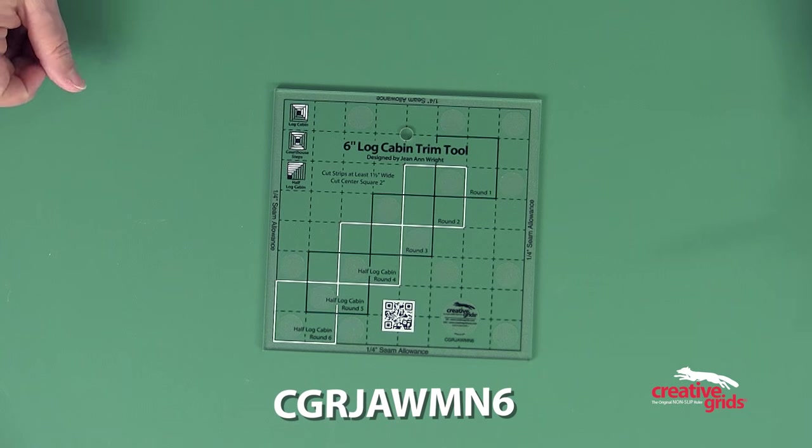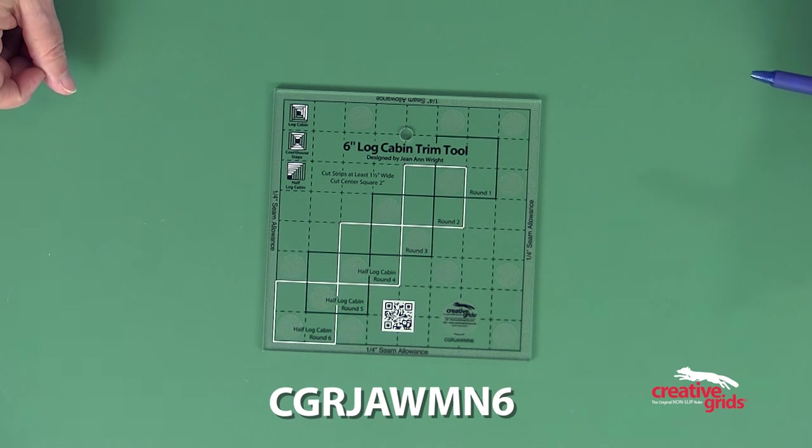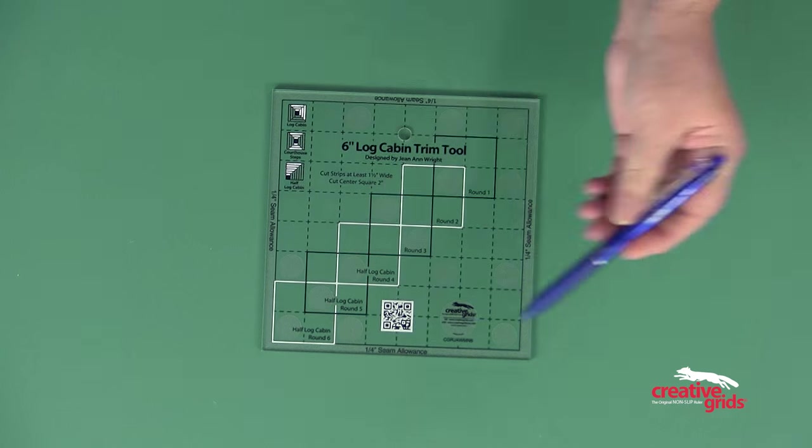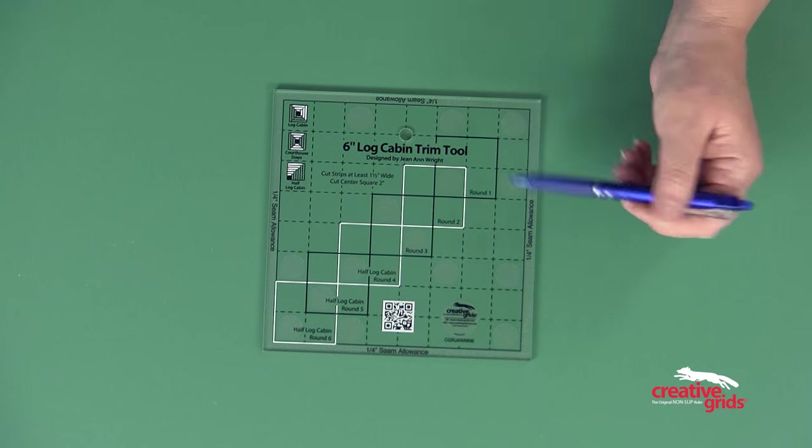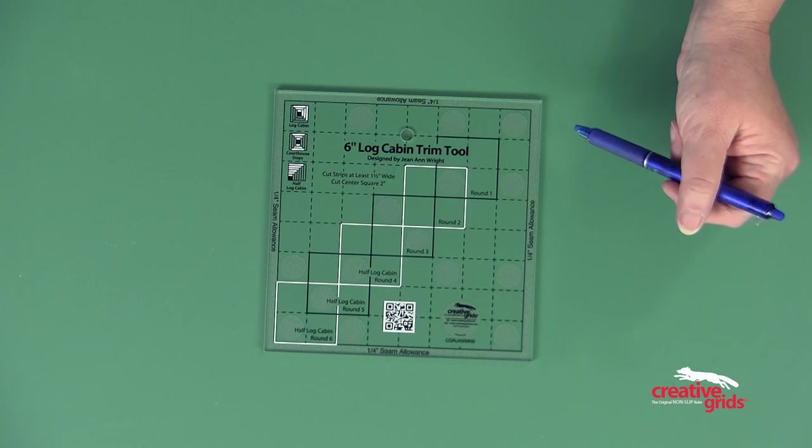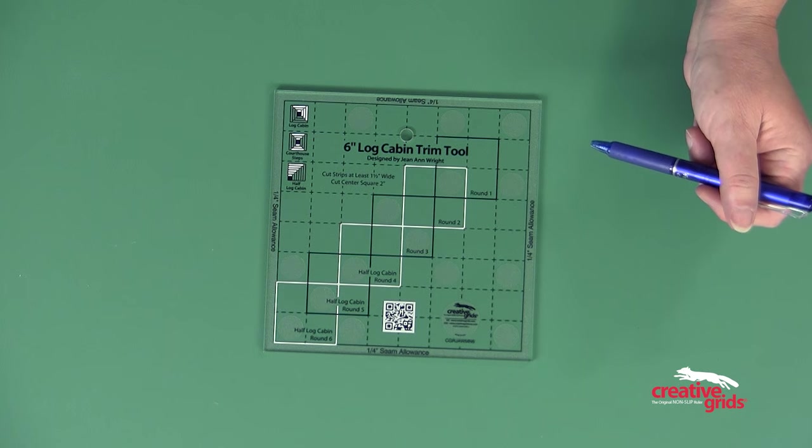The 6-inch Log Cabin Trim Tool is one of a series of trim tools designed by Jean-Ann Wright. It has grip around the outside edge and dots for grip on the entire ruler. The grip stops the ruler from slipping when you're cutting and trimming your blocks.